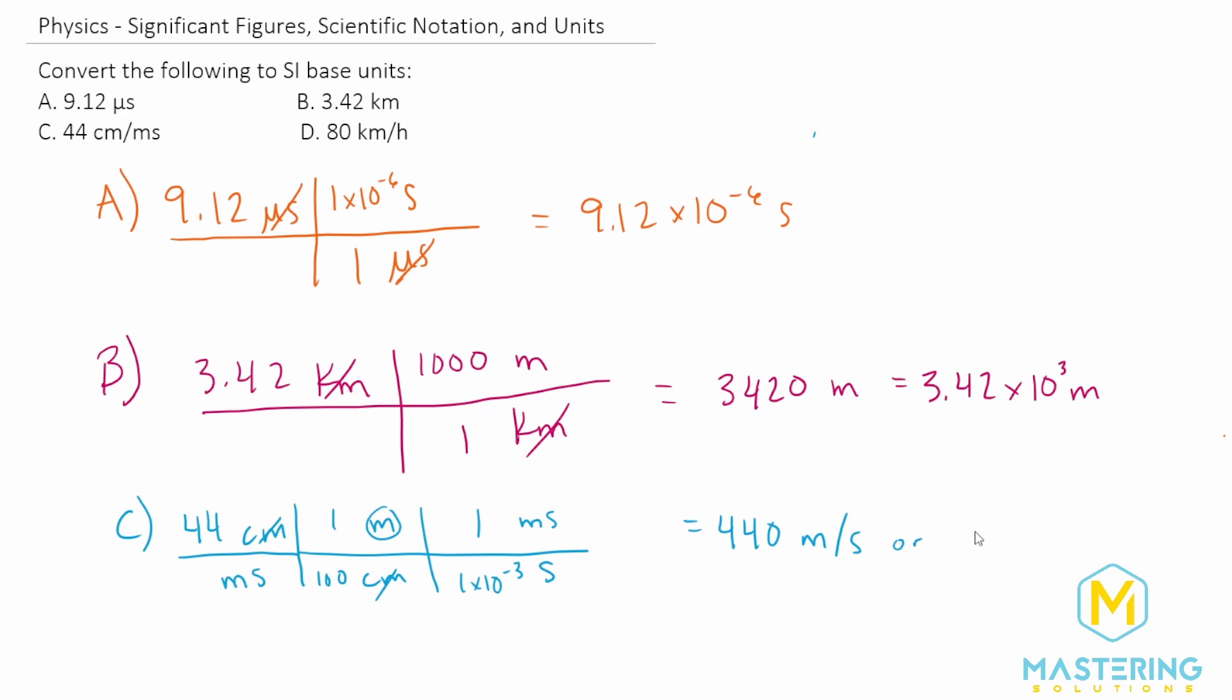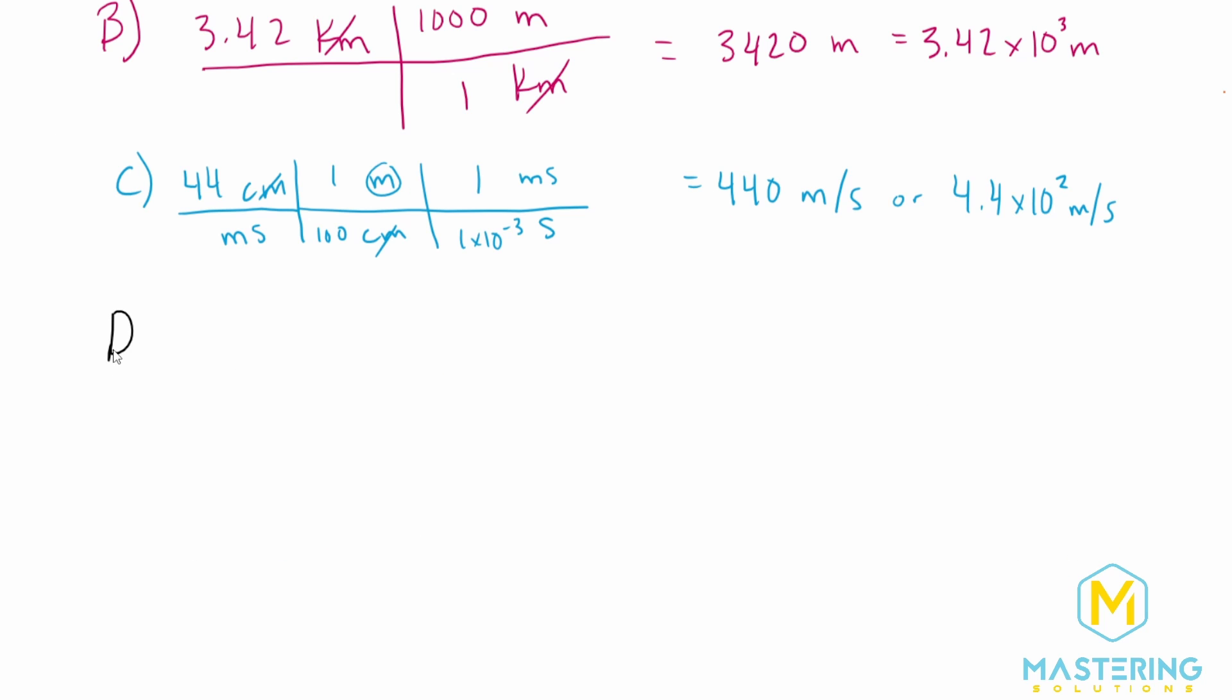Or if we put it into scientific notation, we'll have one, two, so we'll have 4.4 times 10 to the two meters per second. And lastly, for part D.